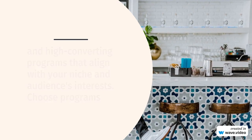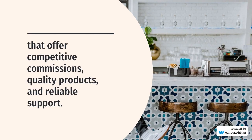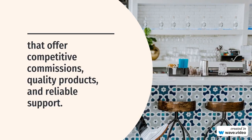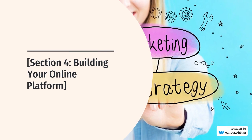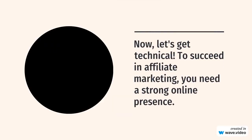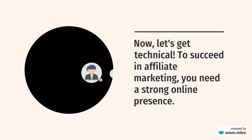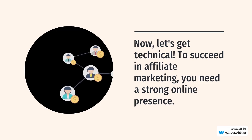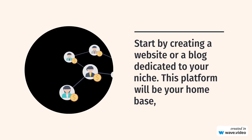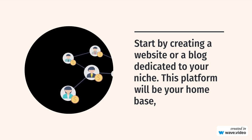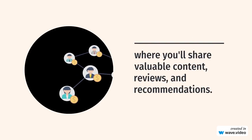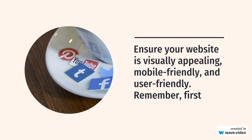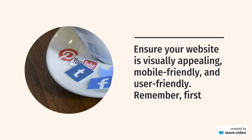Section 4: Building Your Online Platform. Now, let's get technical. To succeed in affiliate marketing, you need a strong online presence. Start by creating a website or a blog dedicated to your niche. This platform will be your home base, where you'll share valuable content, reviews, and recommendations. Ensure your website is visually appealing, mobile-friendly, and user-friendly. Remember, first impressions matter, and you want your visitors to stick around and engage with your content.